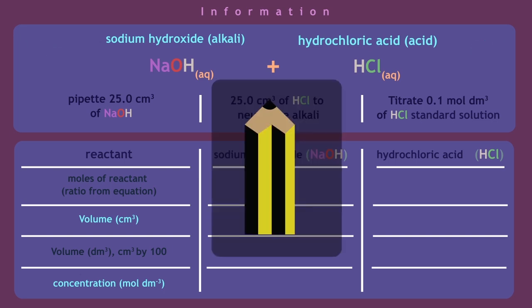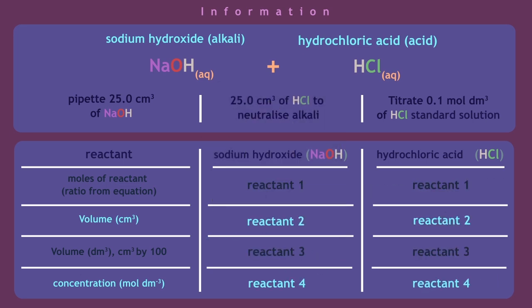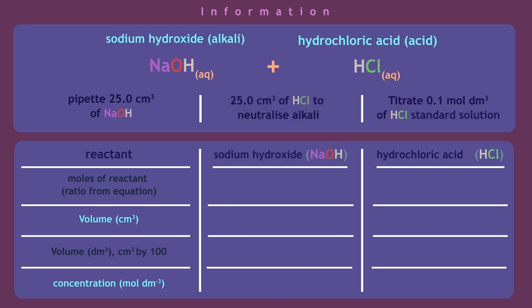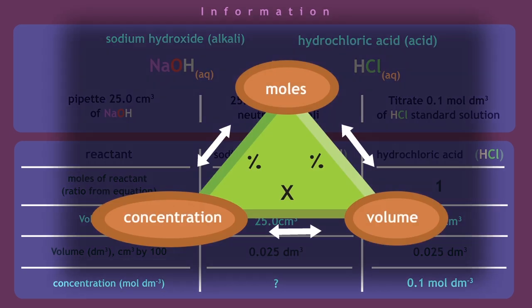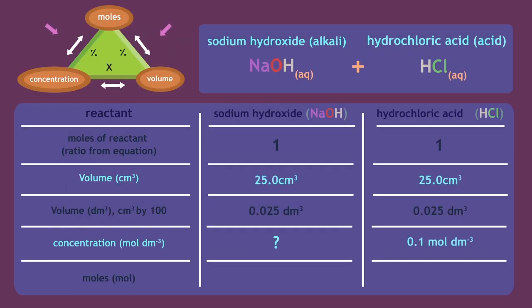Pause the video, write down the reactants in the table, and record all the information you know about the acid and the alkali. Your completed table should show the concentration and volume of the acid used to neutralize the sodium hydroxide: 0.1 molar hydrochloric acid and 0.025 dm³. The next step is to use the formula triangle to calculate the number of moles, and add this to your table.